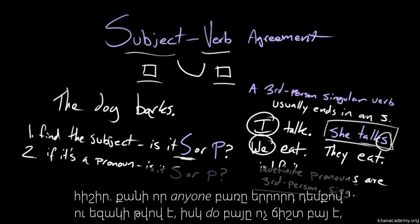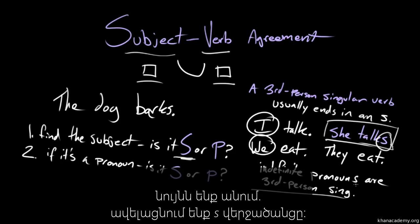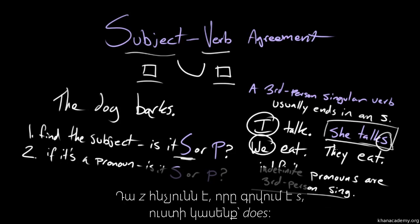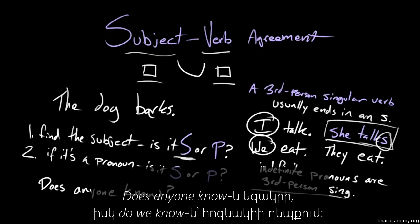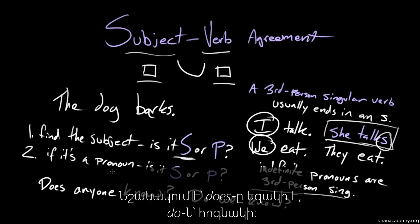And although do is an irregular verb, we still kind of hold to the idea that a third person singular verb ends in an S. So it's a Z sound written as an S. So we would say does. Does anyone know? As opposed to, if it were in the plural. Do we know? Right? So does is singular, do is plural.